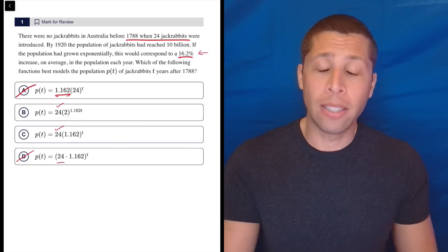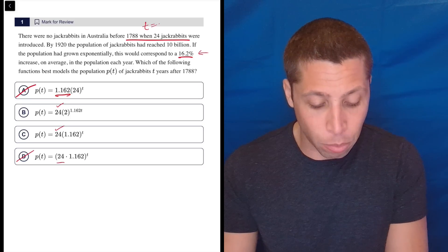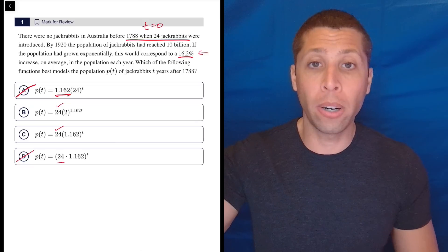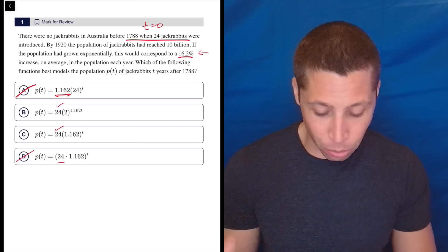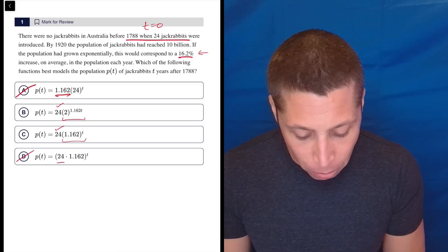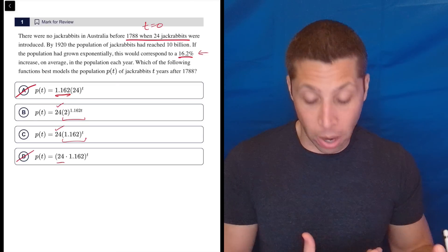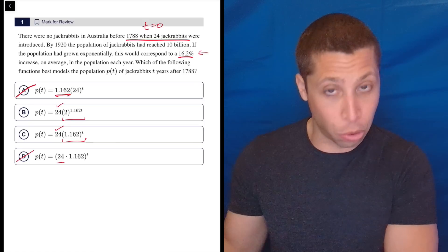Now we can very easily demonstrate why this works. If you put zero in for T, that's what this is basically telling us. Remember, anything raised to the zero power is going to be one. So that means that if we put a zero in, no matter what these exponent things look like, both of these would produce a one. 1.162 to the zero is one, and then one times 24 is 24.